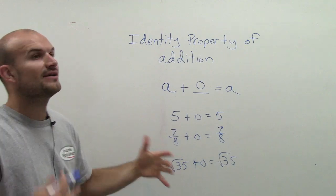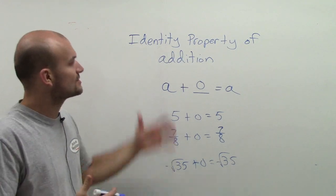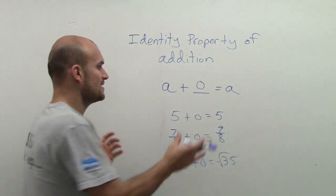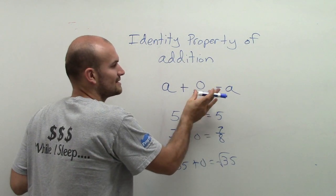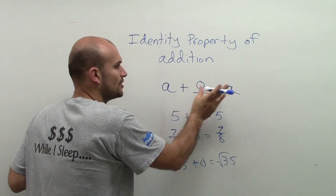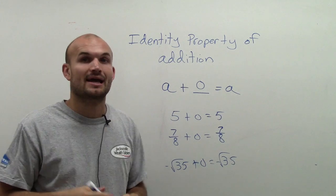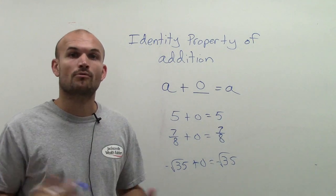So this is very important for you guys to understand this identity property of addition. Because if we can get our number to be added by 0, we understand that we can get back A, which is crucial for what we're about to be learning later.